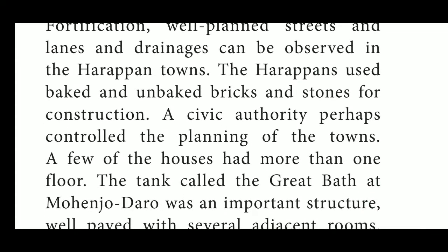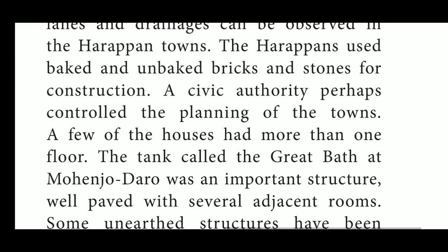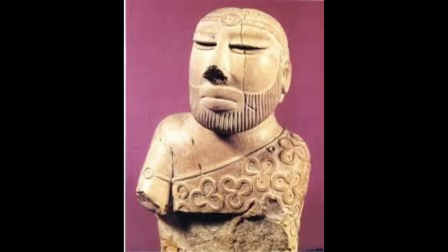There was a common bath called the Great Bath at Mohanjodaro. It is one of the important structures, well-paved with several adjacent rooms for changing clothes. A granary was also discovered at Mohanjodaro. Through these two buildings we can understand the architectural techniques of the Indus people. They must have had a political organization at the level of an early form of state. A male image from Mohanjodaro has been identified as the priest-king, though the accuracy of this interpretation is uncertain.